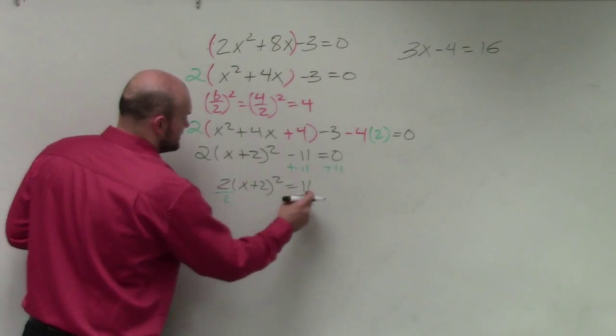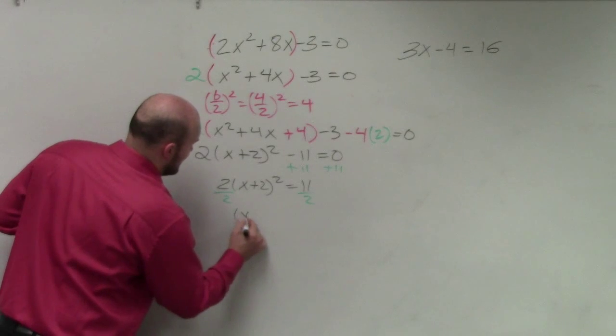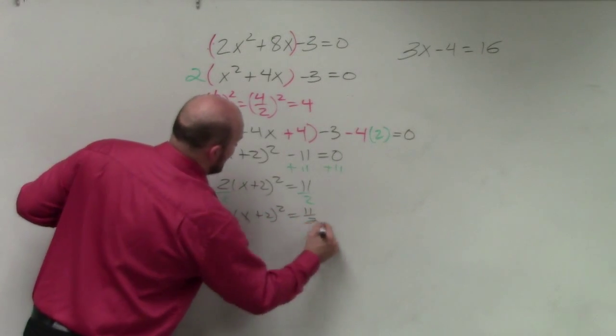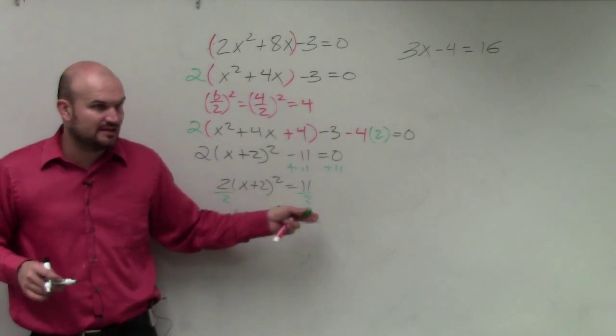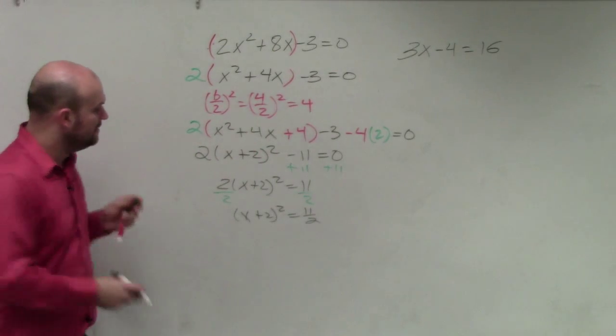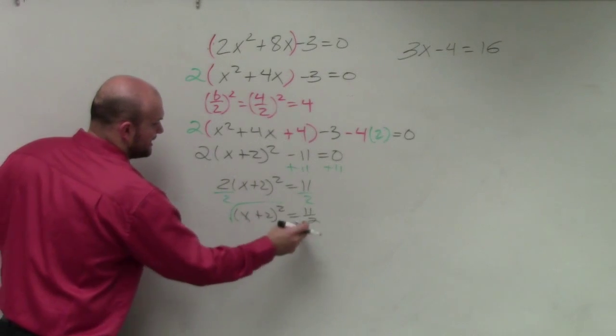Then I divide by the 2. Then I have x plus 2 squared equals 11 halves. Do not write it as a decimal. Leave it there. 2 does not divide into 11, so we leave it there. Then we undo squaring by taking the square root.